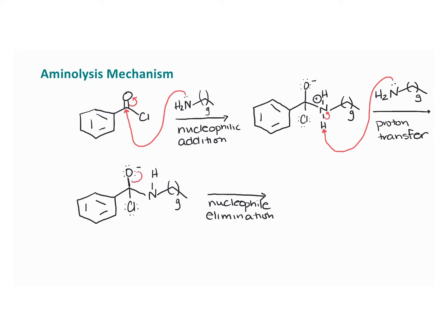So now we've got our tetrahedral intermediate, and it's going to go through a nucleophilic elimination and a tetrahedral collapse. These electrons come back down and bump off that chlorine as a leaving group, and so you end up with an amide.